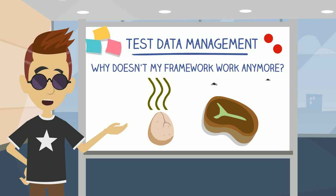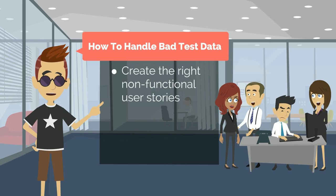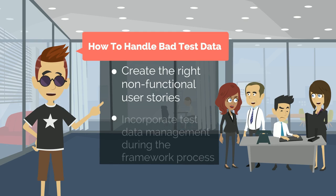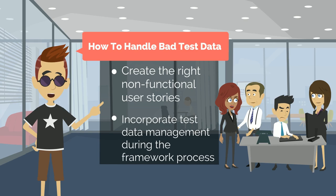So one way to handle that is to make sure you've created the right user stories — non-functional user stories for test data — and added those to the backlog, and do that at the beginning of your project. Your goal should be, if you're doing automation the right way, you're incorporating test automation and test data management into the framework build process, and you're dealing with test data management as part of that process.